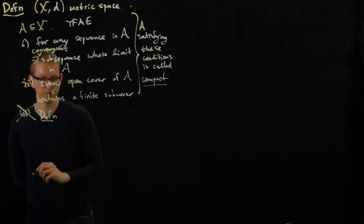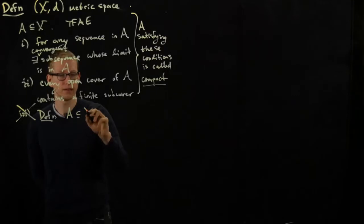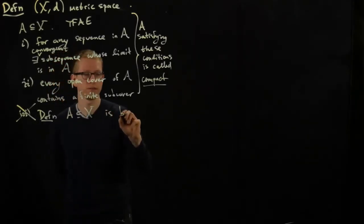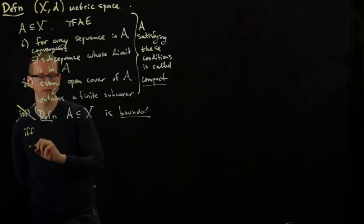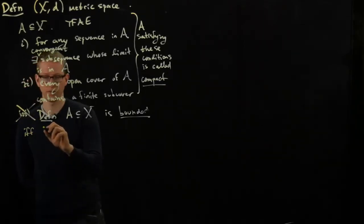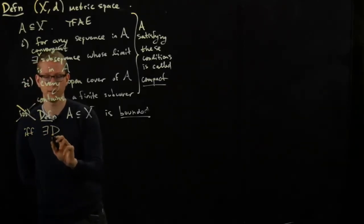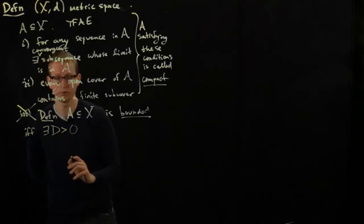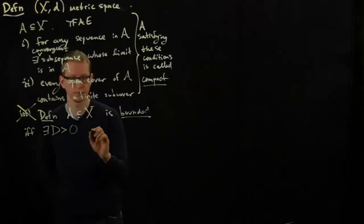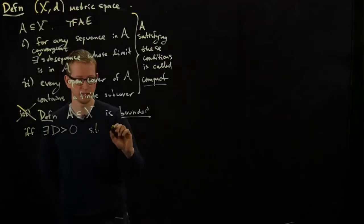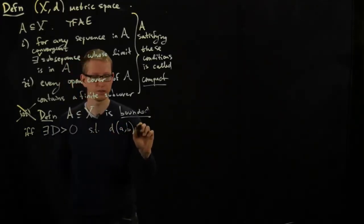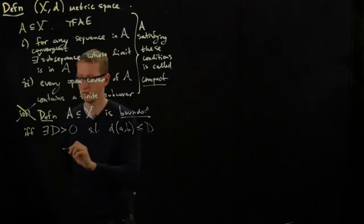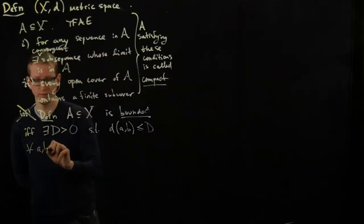So let's give another definition. A as a subset of X is bounded if and only if there exists some distance d which we will think of as the diameter, such that the distance between a and b is always less than or equal to d for all a and b in A.